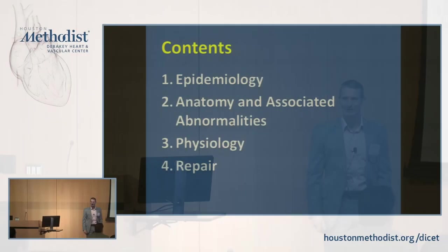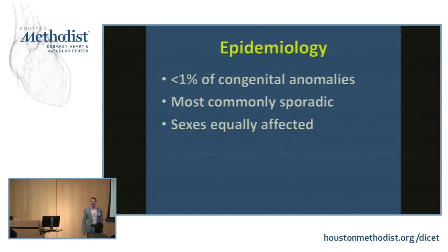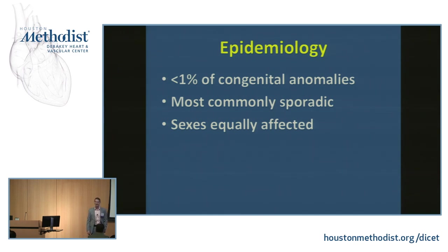We'll talk about epidemiology of Ebstein's anomaly, the anatomy and associated abnormalities, physiology, and then repair. This is another one that's about as common as hen's teeth — probably not as uncommon as a complete Shone's complex, but nevertheless not something you're going to see every day. It is associated in certain pedigrees with chromosomal or genetic abnormalities, even myosin heavy chain 7 genetic defects, but the majority of cases are sporadic.